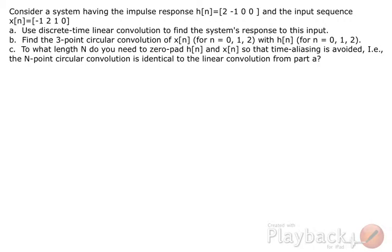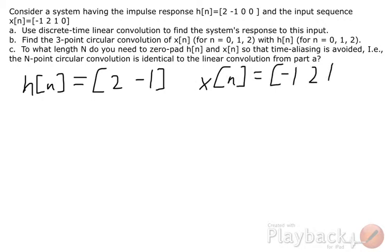We can rewrite h of n and x of n in shorter forms, ignoring the zeros at the end. And perform the linear convolution, and we can use the tabular method.